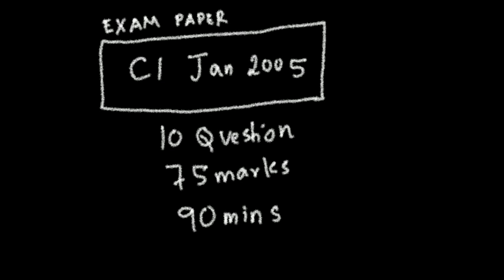The exam paper is C1, January 2005. There are 10 questions, 75 marks, and the time is 1 hour 30 minutes — that's a total of 90 minutes. So let's start.